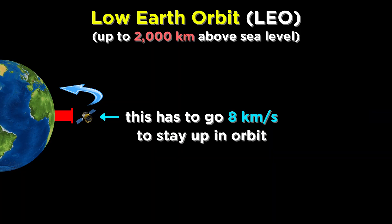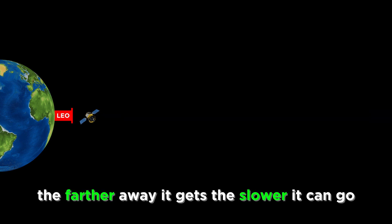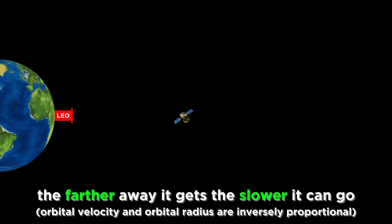Objects that are very close to the Earth have to orbit very fast, at least about eight kilometers per second. But the farther away objects get from Earth, the more slowly they can go and maintain orbit, so orbital velocity and orbital radius are inversely proportional.